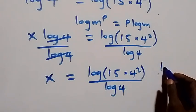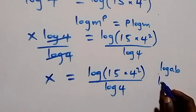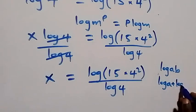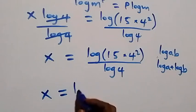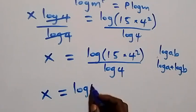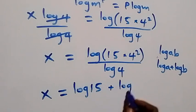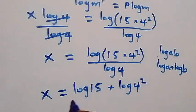Then when we apply the law of logarithm, from when we have log a times b which can be written as log a plus log b, that is what we have here. Now this becomes x equals to log 15 plus log 4 squared, then over log 4.